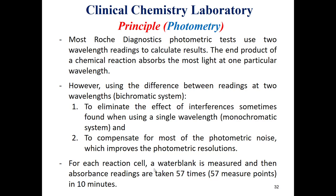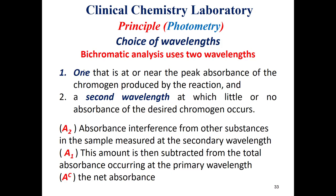For each reaction cell, a water blank is measured and then absorbance readings are taken 57 times. So in 10 minutes, we start with the water blank measurement and then make measurements at 57 points. We have a primary wavelength and a secondary wavelength as discussed.